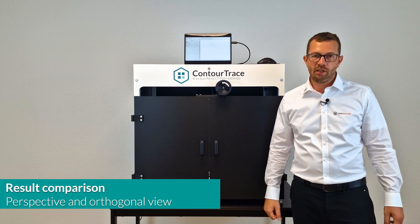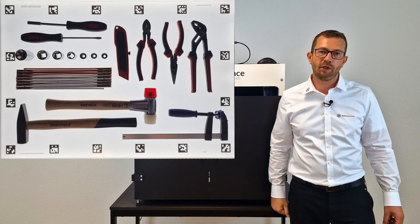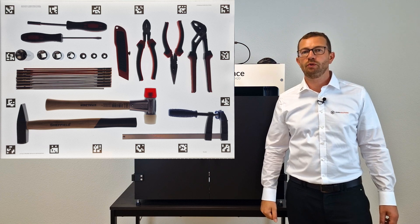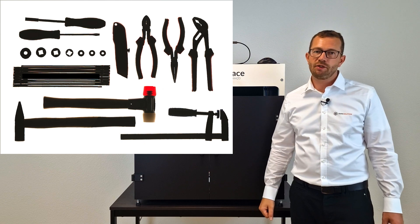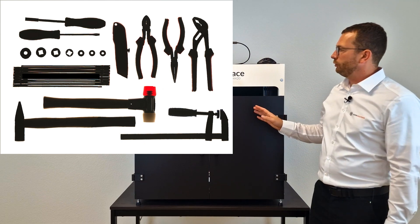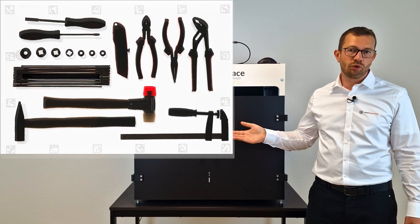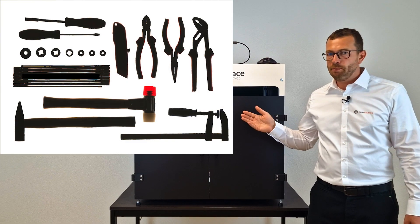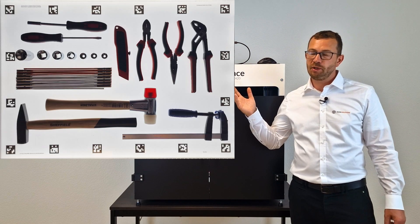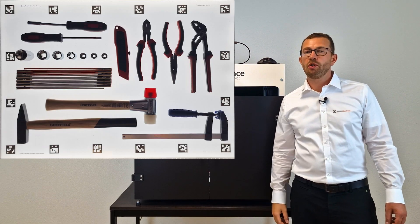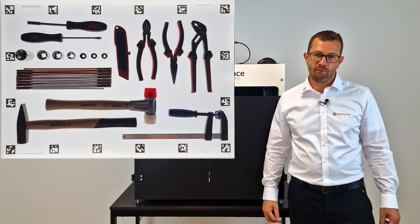Now I will insert two more images here. One is the image of the tool taken from above with a smartphone or a digital camera with a perspective view. The other is the image we have now received from our software ContourTrace with the help of the area scan portal. This is the perspective view, and this is the orthogonal view of the objects. In the orthogonal view, the outer contours are true to form. With the perspective view, it is hardly possible, especially if the camera axis is not directly above the objects or if they have a certain height.